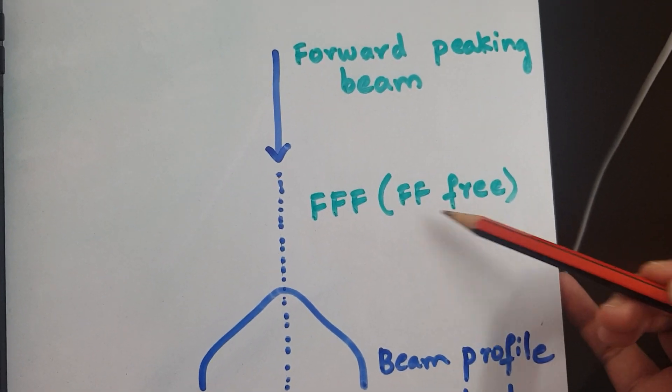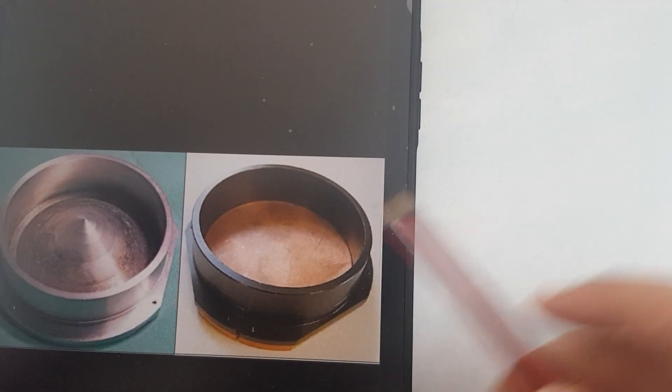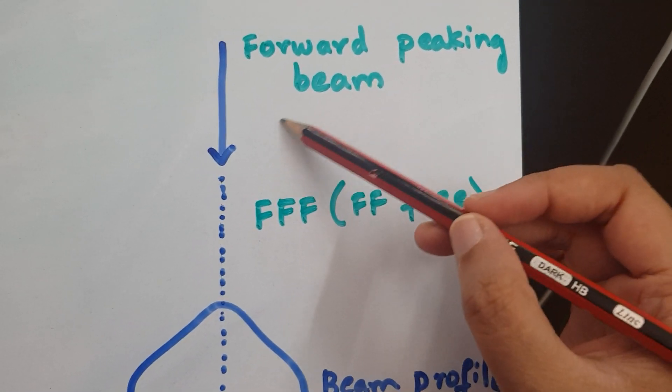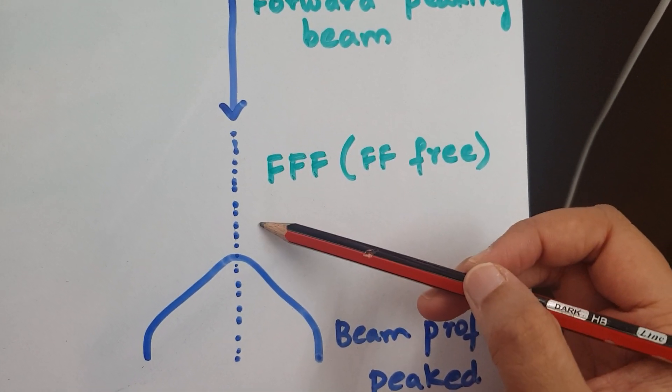Now what is flattening filter free beam? FFF is where there is no flattening filter, like I showed in this image. There is no flattening filter here, so a forward peaking beam when it does not have any flattening filter.